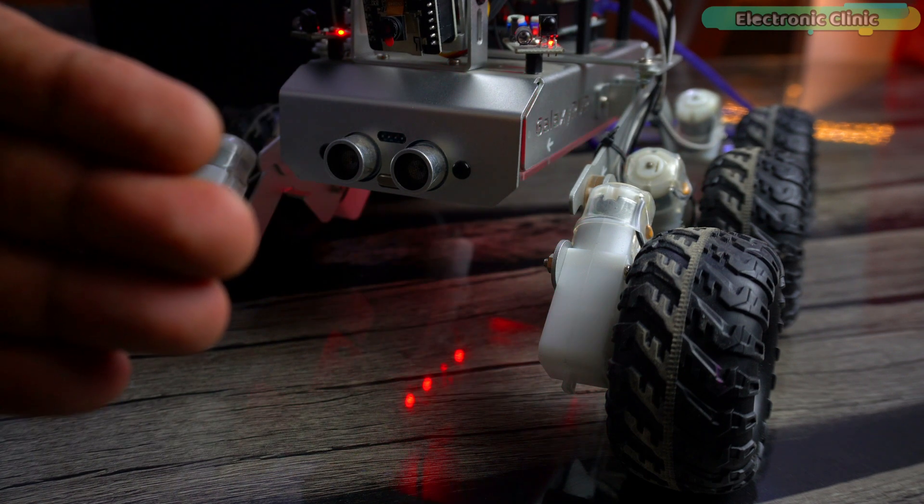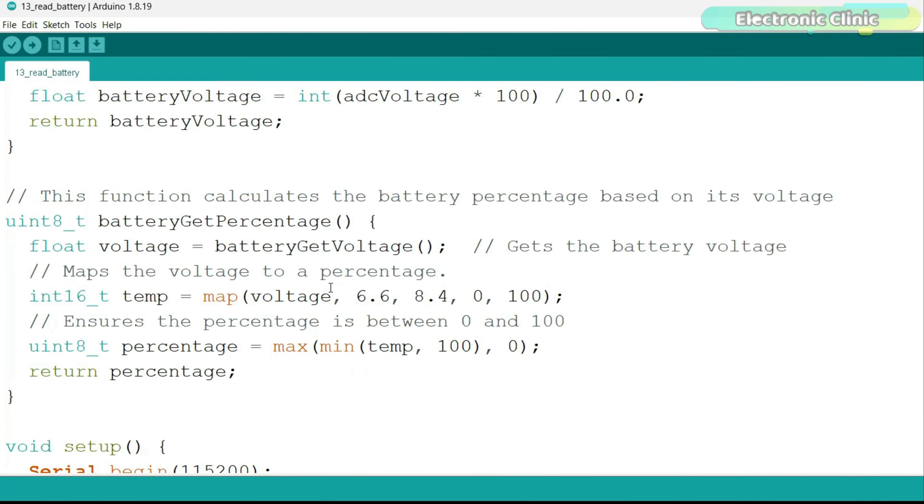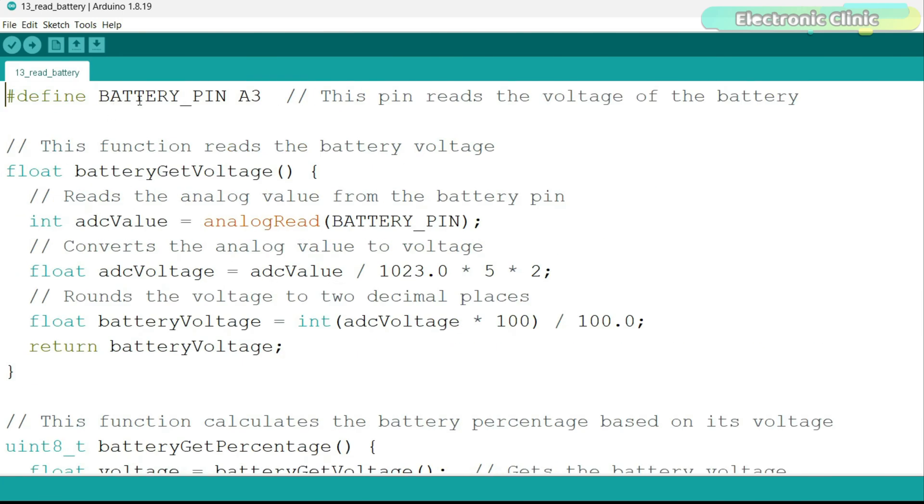Now, let's go ahead and measure the battery voltage. For the battery voltage monitoring, we have this program. You can see the battery pin is connected to the Arduino analog pin A3. Then, we have this user defined function, battery get voltage. Its return type is float and it doesn't take any argument as the input.